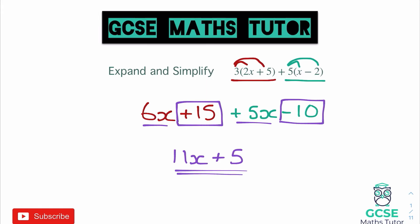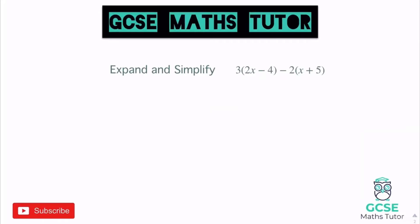Let's have a look at another one. Expand and simplify this. Now I've got this minus two in the middle here so we just need to be careful but let's just treat it in exactly the same way. We'll times the first bracket by three to start with. Three times 2x gives us 6x and three times negative four gives us negative 12.